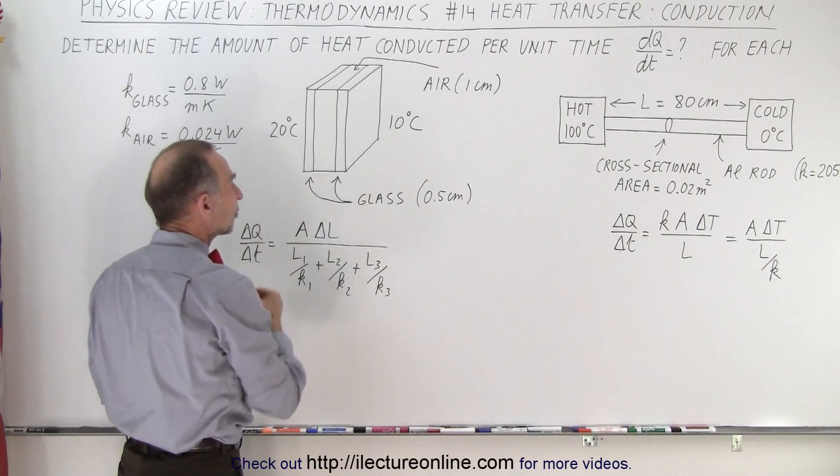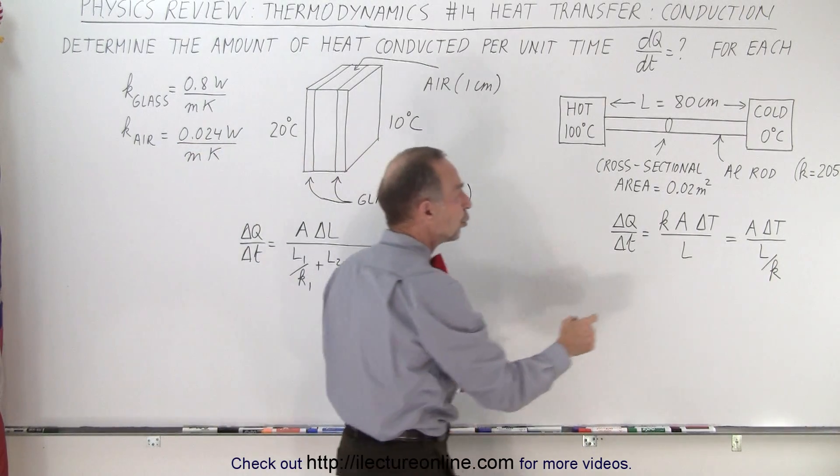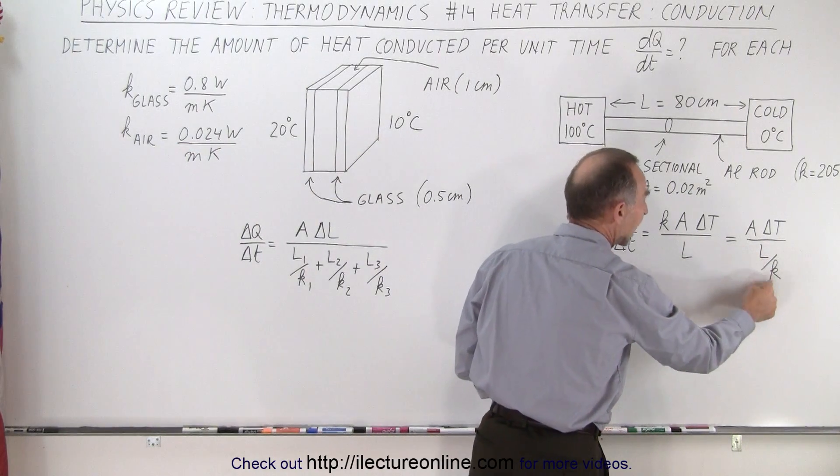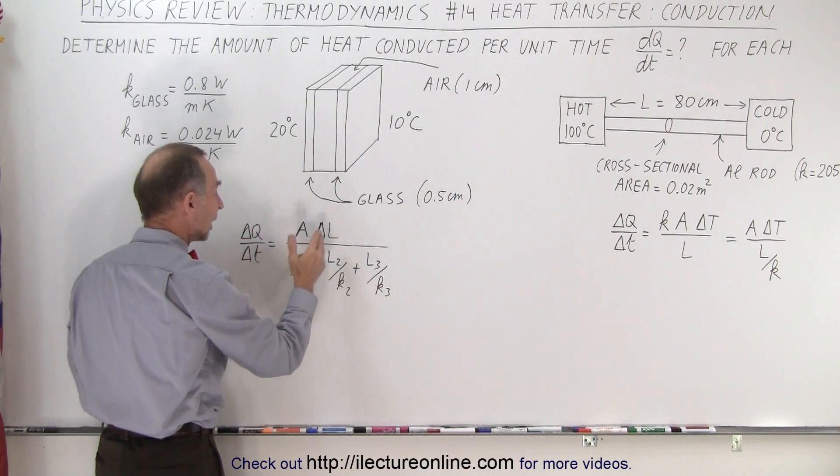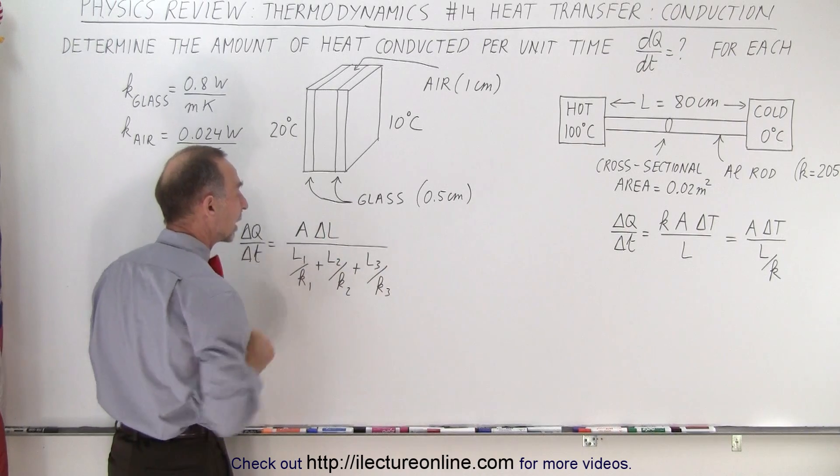If you have three layers then in the denominator you do want to write it in terms of l over k but then you want to account for all three layers so you have l1 over k1, l2 over k2, and l3 over k3.